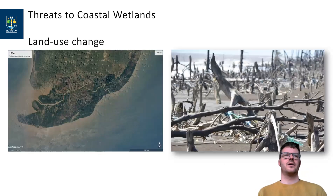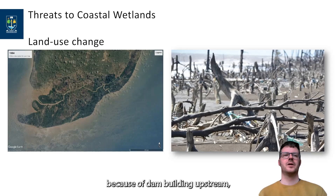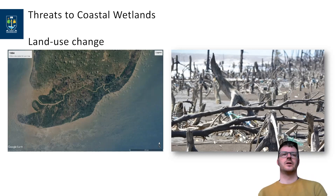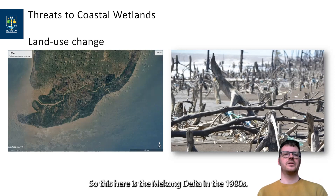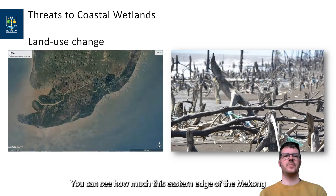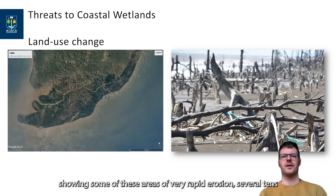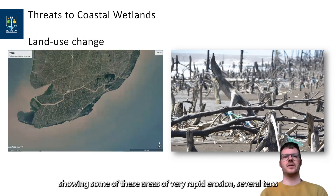Issues surrounding coastal wetlands include, for example, erosion or coastal erosion. This is partially caused by humans — with rising sea levels and altered sediment supply because of dam building upstream, we currently see a lot of erosion happening on some major delta regions around the globe. This here is the Mekong Delta in the 1980s, and if I toggle between 2020 and 1984, you can see how much this eastern edge of the Mekong Delta is actually receding due to coastal erosion — several tens to hundreds of meters per year.